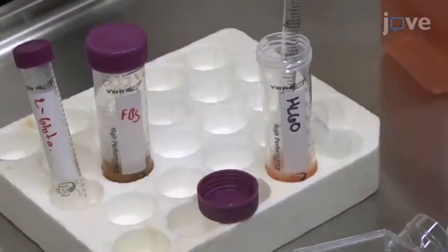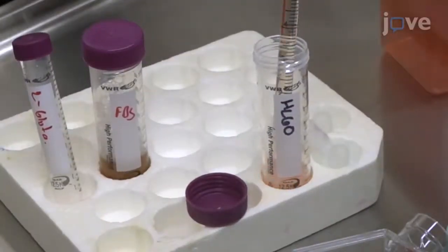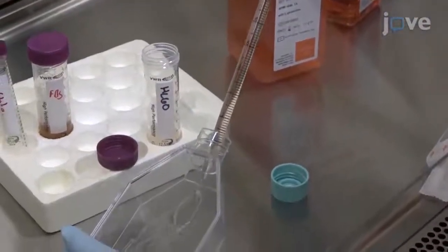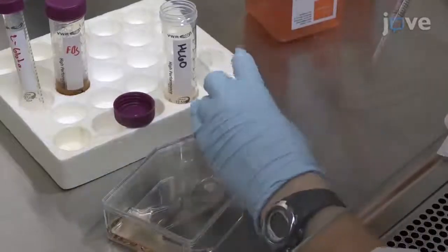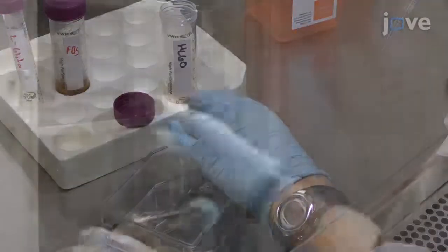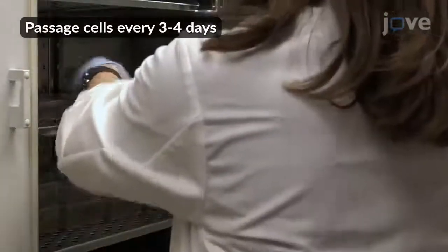For propagation and maintenance of HL-60 cells, culture 5 million cells in 10 mL of HL-60 cell culture media in 75 cm² vented flasks at 37 degrees Celsius and 5% carbon dioxide.